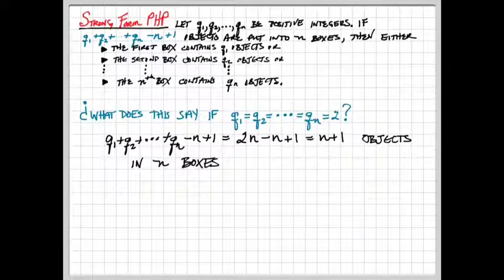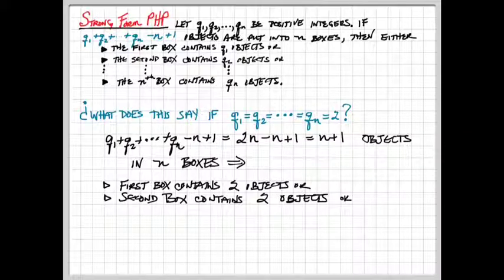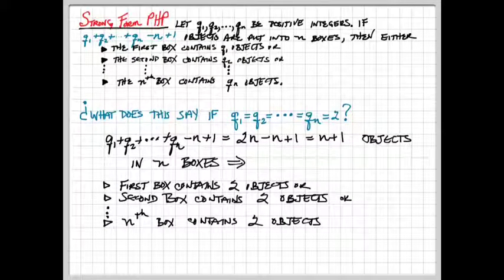So when our filling factor is always 2, we're in the situation where we have the hypothesis of the original simplified form of the pigeonhole principle. The conclusion becomes the first box contains 2 objects, or the second box contains 2 objects, or the third box contains 2 objects, or the nth box contains 2 objects.